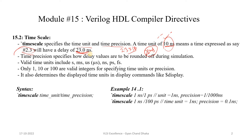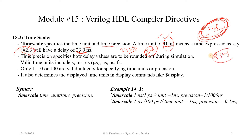For example, if the time unit is defined as 1 nanosecond and we specify a delay of #2.3, the meaning will be 2.3 nanoseconds. This is how the simulator calculates the real delay using the delay specified in the testbench and the time unit.